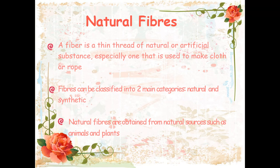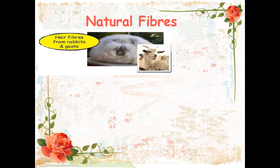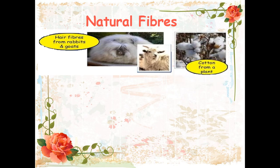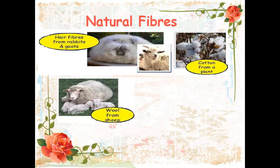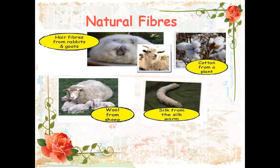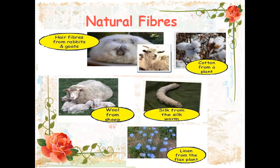Natural fibers are obtained from natural sources such as animals and plants. For example, hair fibers from rabbits and goats, cotton fibers from plants. Pakistan is rich in cotton production. Wool from the sheep — Pakistan is also rich in sheep wool production. Silk from the silkworm; in Punjab areas there are silkworm industries. Next is linen from the flax plant — you can find videos on how linen is produced from the flax plant.